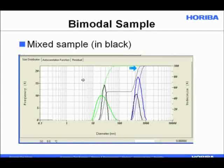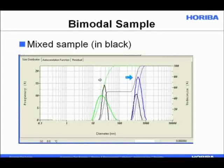For multimodal size distribution analysis, peaks generally need to be spaced fairly far apart, and the scattered intensities from each population should be within the same order of magnitude. This is not routine quality control analysis — it requires expert interpretation. But for formulation work, if you consistently see two peaks when you expected one, that's very valuable information to guide your recipe or manufacturing scheme. This kind of analysis belongs more to the R&D lab than the quality control environment.